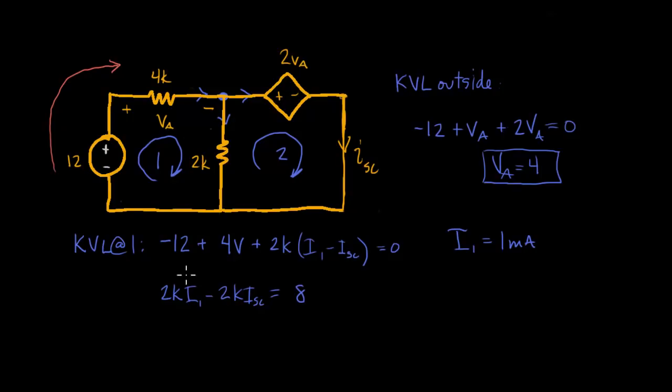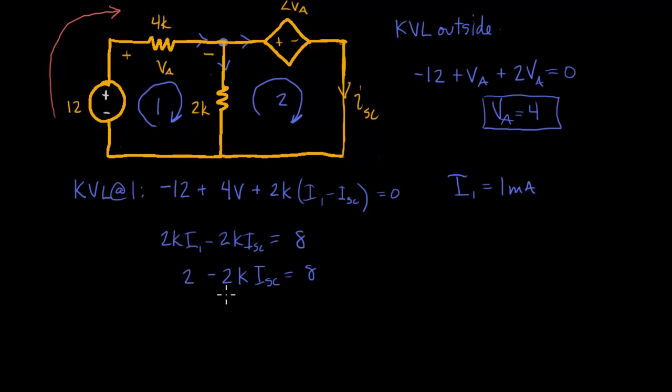So we can now plug in for I1 and then we can solve for ISC. So this is 2K times 1M, so that's 2 minus 2K ISC equals 8. And we'll bring the 2 over to be 6 and then we'll divide by negative 2K. And find that ISC equals negative 3 milliamps.